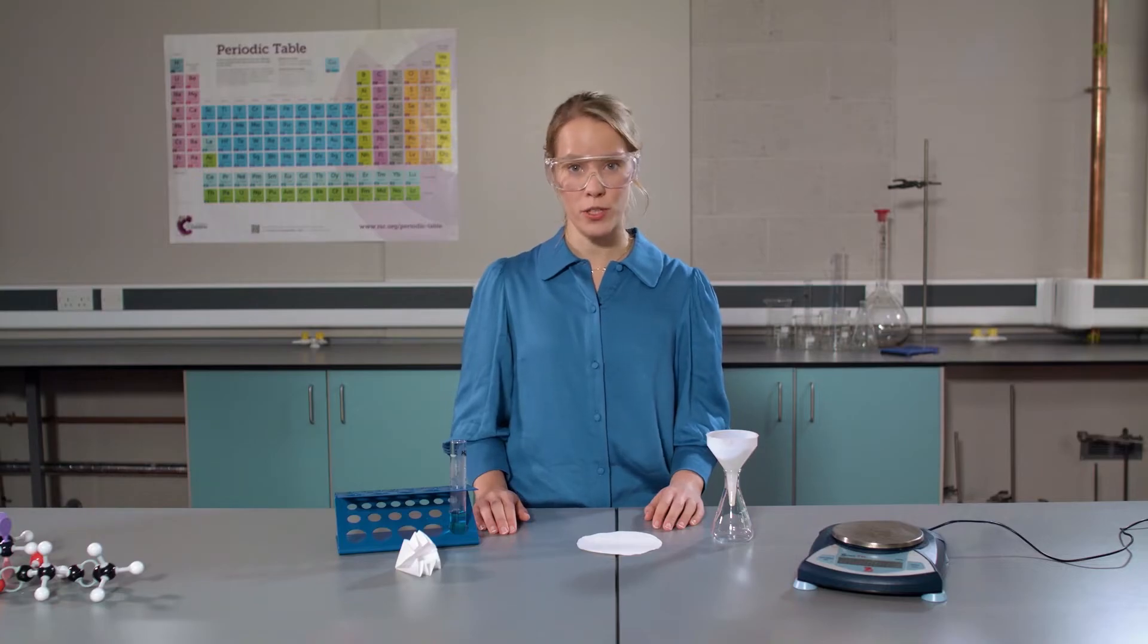In this next step, we're going to separate the product, copper sulfate, from the unreacted reactant, copper oxide, using filtration. We will be using fluted filter paper.